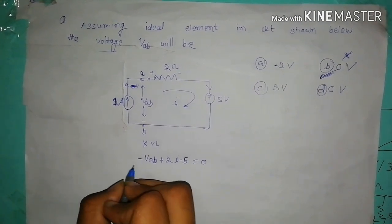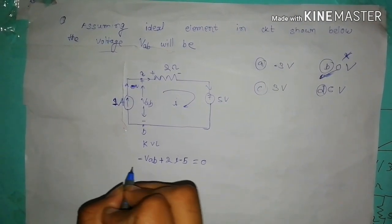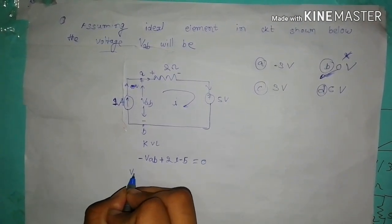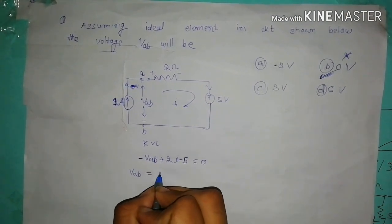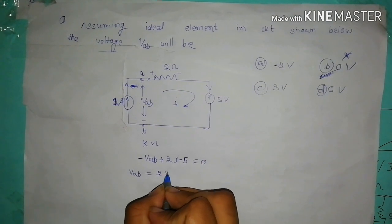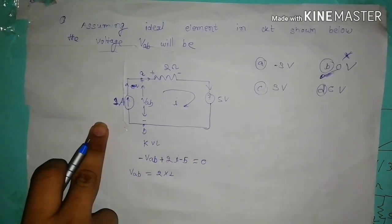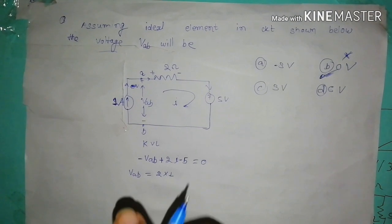I will solve this equation. If I modify this equation, I can write like that. VAV and 2 into 1. Here I take the value of I as 1 ampere. Is it clear?